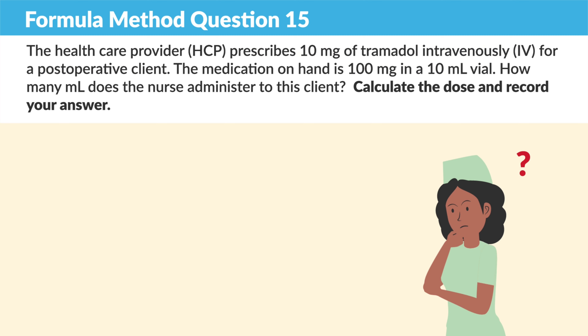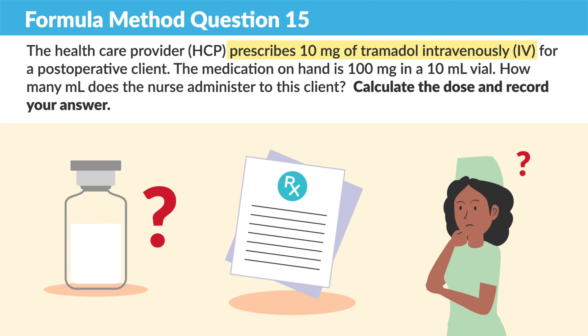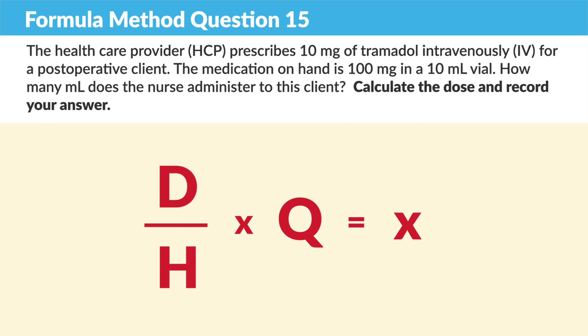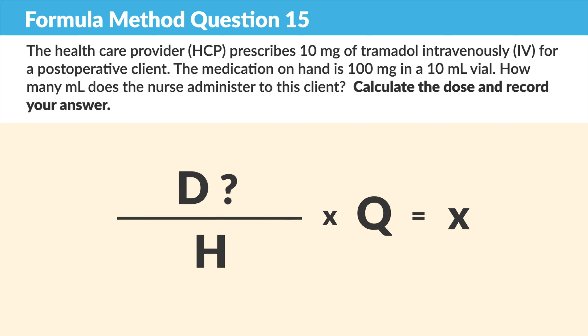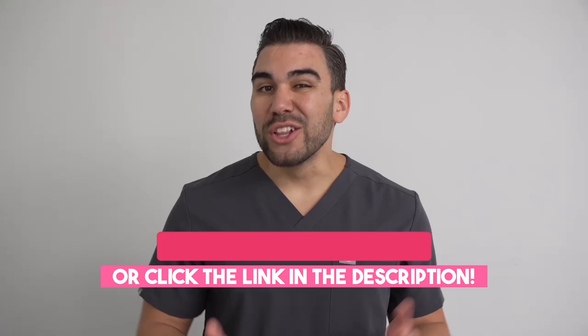So let's break it down. What are we solving for? We're solving for mLs per dose. We're going to set up the desired over have, or formula method — D over H times Q. The D here is our desired prescribed dose, and that is 10 mg.